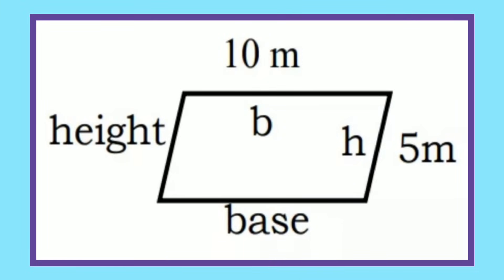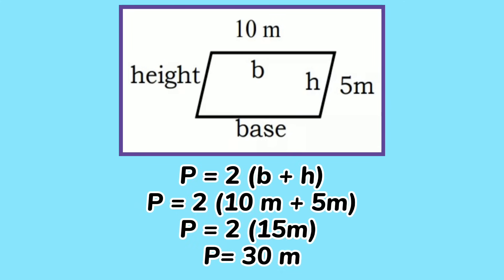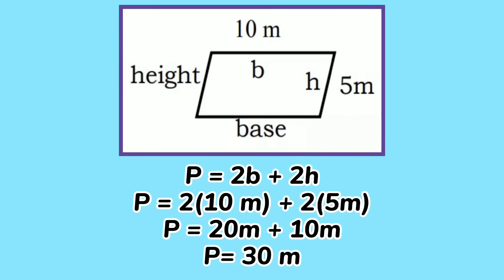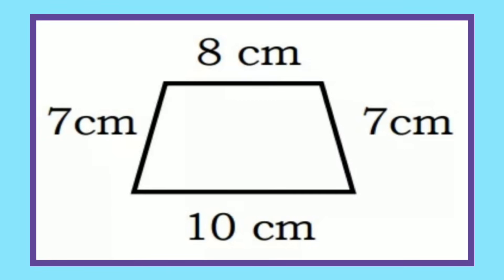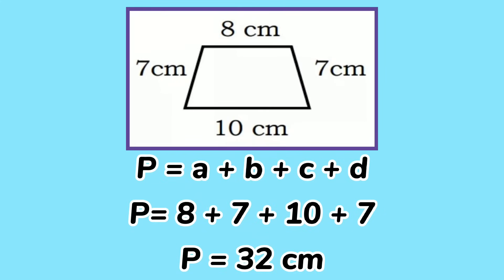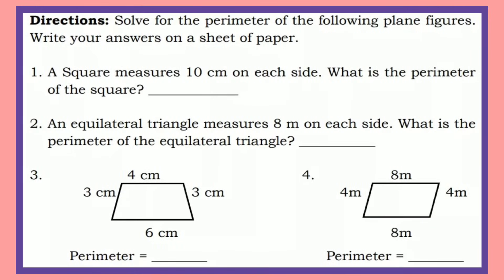How about this figure? P equals 2 times B plus H. So, 2 times 5 is 10, plus 8 plus 7 plus 10 plus 7, and the perimeter is 32 centimeters.